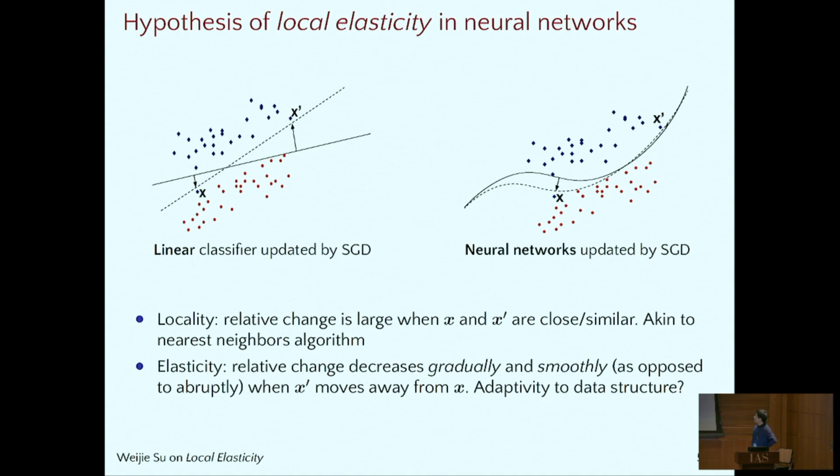These are our hypotheses. Our hypothesis is that deep learning is this category. Deep learning has local elasticity. This term has two parts. Let me parse this one by one. First, locality. What does locality mean? Locality means that if I update at X, then a change at X prime will be small if X prime is far away. And what is elasticity? Elasticity means that it's not like nearest neighbors. In deep learning, we believe that the change will be smooth. It will be smooth instead of abrupt drop suddenly. So this is the elasticity part.